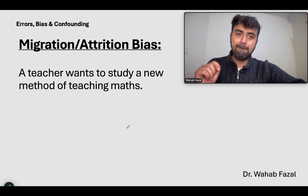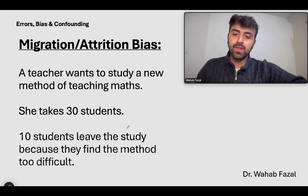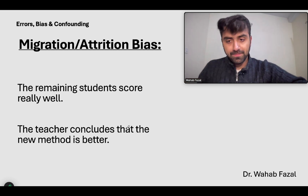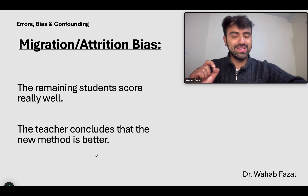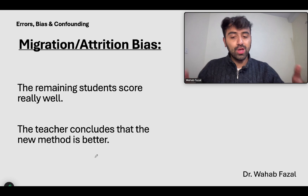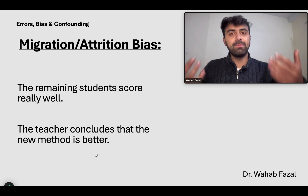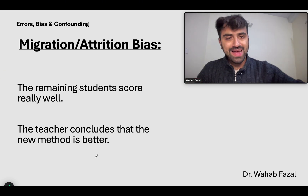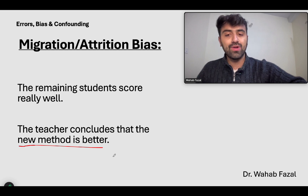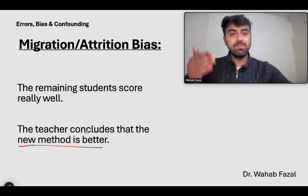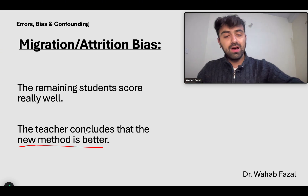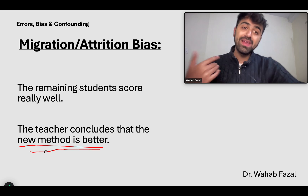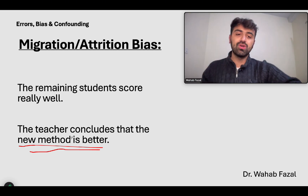A teacher wants to study a new method of teaching maths. She takes 30 students. Ten students leave the study because they find the method too difficult. The remaining students score extremely well, and the teacher concludes that the new method is better. Why is this wrong? The people who left also represent the general population of students — there might be students who are not as motivated or don't have a great aptitude in maths. You can't conclude the new method is better for everyone, because too many people left the study.